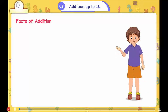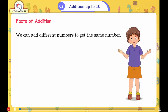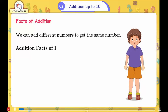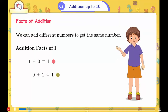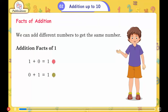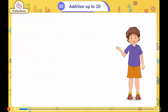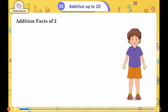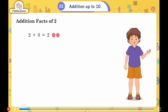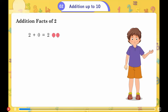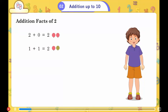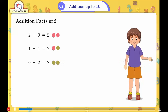Facts of addition. We can add different numbers to get the same number. Addition facts of 1: 1 plus 0 is equal to 1, 0 plus 1 is equal to 1. Addition facts of 2: 2 plus 0 is equal to 2, 1 plus 1 is equal to 2, 0 plus 2 is equal to 2.